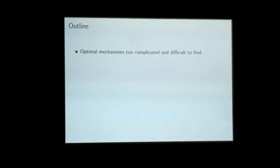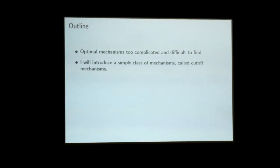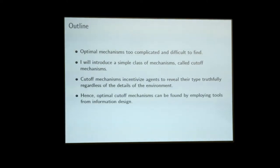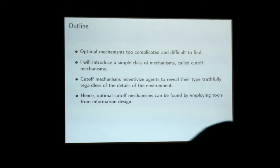What's the approach I'm going to take? It turns out this is one of those problems where it's very hard to find an optimal mechanism, and even if you can find it, it often turns out to be quite complicated. So instead, I'm going to look at a simpler class of mechanisms called cutoff mechanisms. One of their key properties is that they will always incentivize the agent to report the type truthfully. Because they solve this incentive issue, I'll be able to apply relatively standard information design techniques to find the optimal mechanism. At the end, I will provide some conditions under which this restriction is actually without loss of generality.